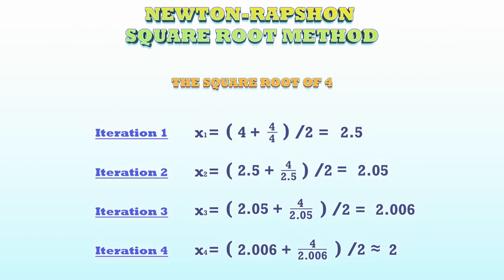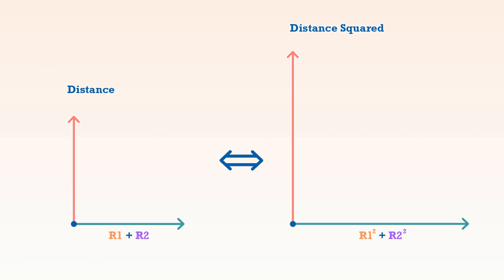We could just return the square of the distance and then compare that result to the sum of the square of the radii of the two spheres. This works because the square of the radii has the same proportion to the square of the distance as the square root of the dot product has to the sum of the radii.